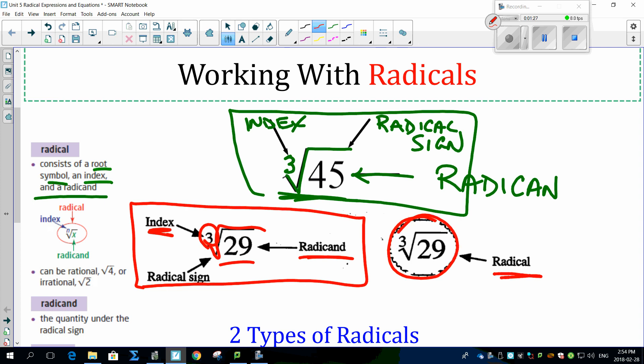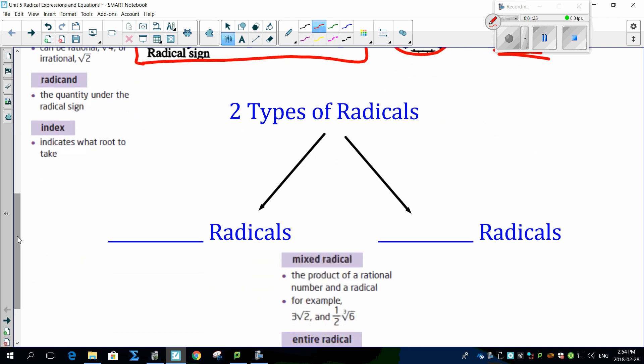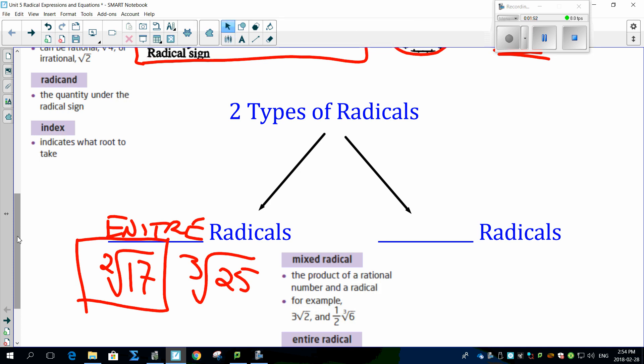You're going to find that we have actually two types of radicals. One is what we call an entire radical. An entire radical means if you're taking the square root of something or the cube root of something - let's say the square root of 17, the cube root of 25 - this whole thing is considered to be an entire radical.